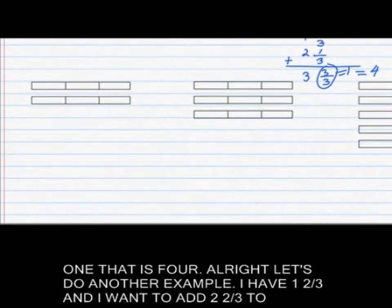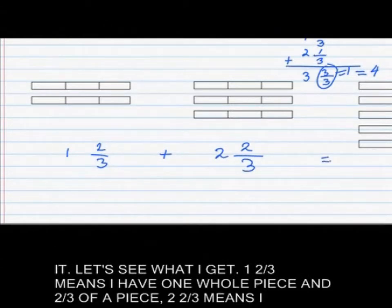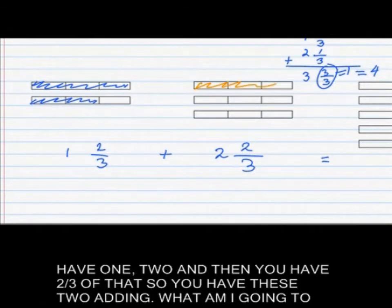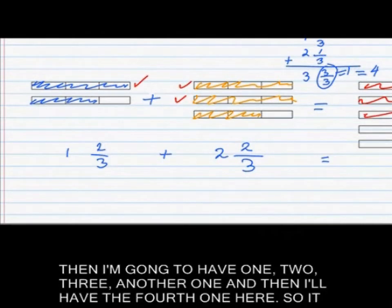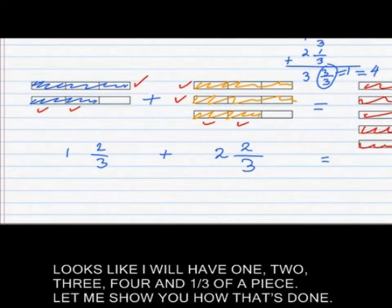Let's do another example. I have one and two-thirds and I want to add two and two-thirds to it. One and two-thirds means one whole piece and two-thirds of a piece. Two and two-thirds means two whole pieces and two-thirds. Combining them, you get three whole pieces and then four one-third pieces, ending up with four and one-third of a piece.